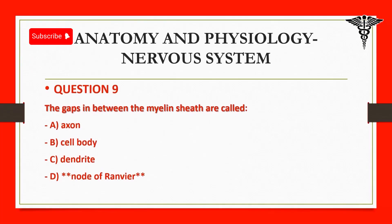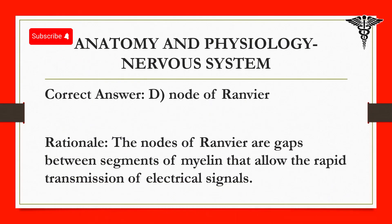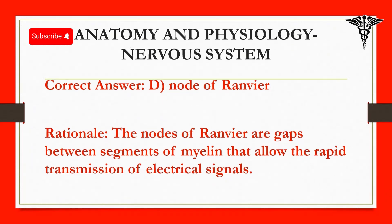Correct answer: D. Node of Ranvier. Rationale: The nodes of Ranvier are gaps between segments of myelin that allow the rapid transmission of electrical signals.